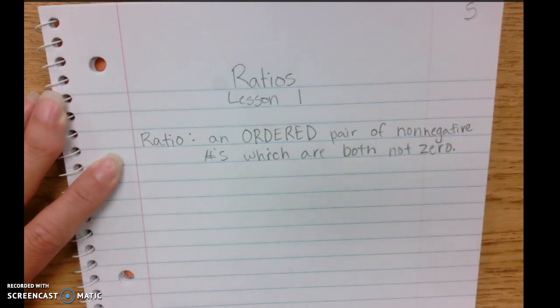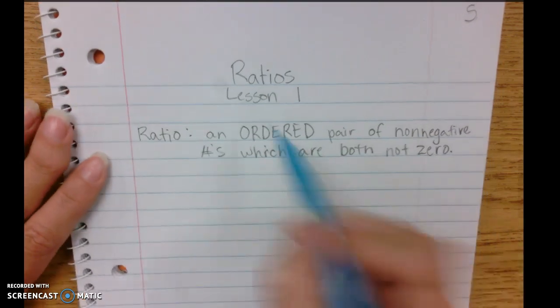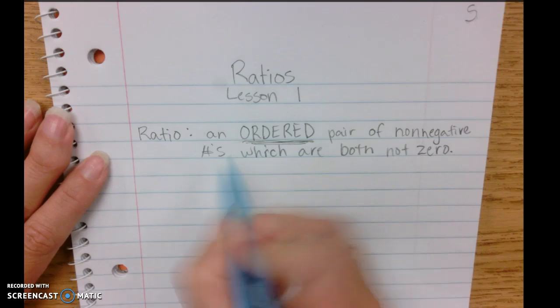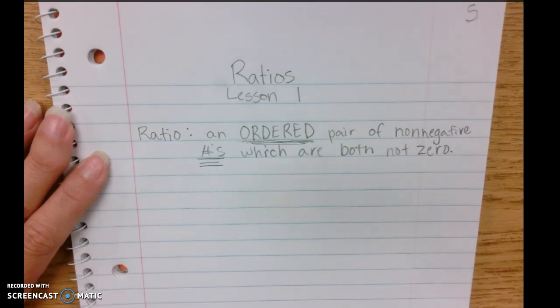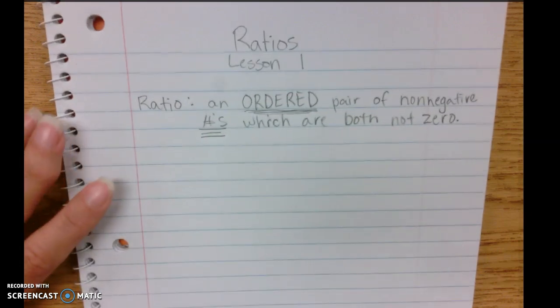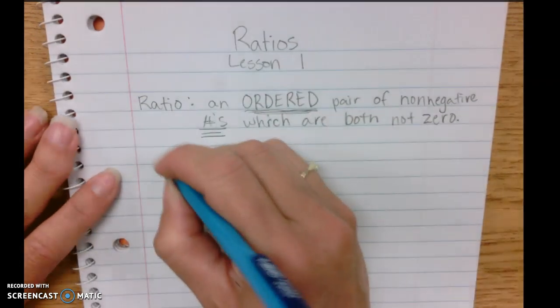The most important part in this definition is the fact that the numbers have to be ordered. Their order matters and that it is only numbers. They are only numbers and their order is important.